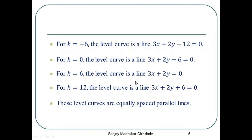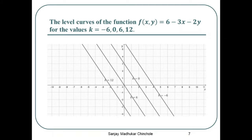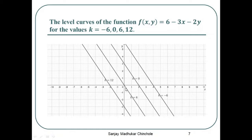This can be shown in the figure. The line towards the right is the level curve at k = −6, which is 3x + 2y = 12. The next line is the level curve at k = 0, which is 3x + 2y = 6. The line passing through the origin is the level curve at k = 6, which is 3x + 2y = 0. The line towards the left is the level curve at k = 12, which is 3x + 2y + 6 = 0.